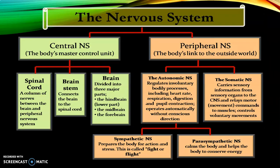To sum it up, the nervous system includes the central nervous system — the body's master control — comprising the spinal cord, brainstem, and brain. The peripheral nervous system is divided into autonomic and somatic. Autonomic is further divided into sympathetic and parasympathetic. That is basically the summary of the anatomy and physiology of the nervous system. Thank you for watching, and don't forget to like, comment, share, and subscribe.